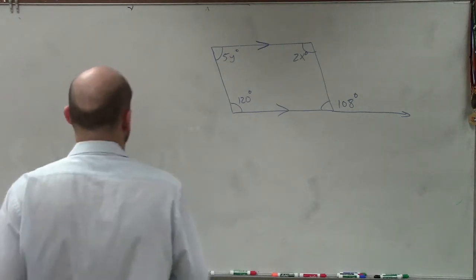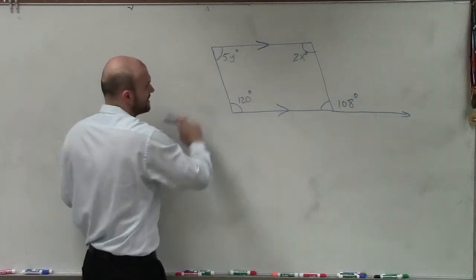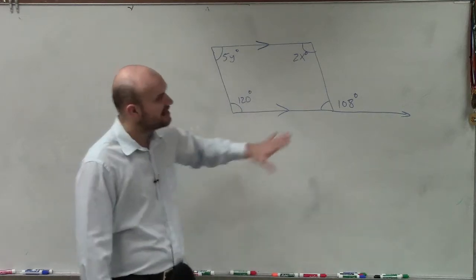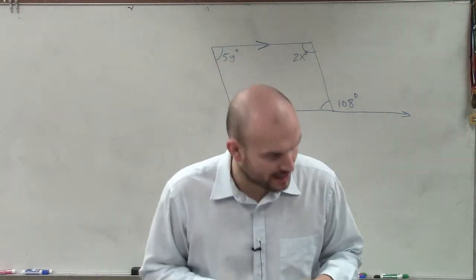Interesting. So in this case, what I have is 5y, 2x, 120. I have parallel lines, and I need to be able to determine what is x and what is going to be my y.